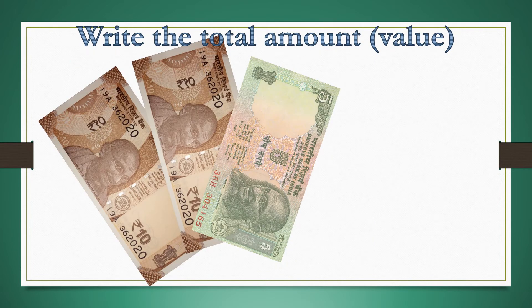Now let us add the given currency notes and find their values. Here we see two 10 rupees notes and one 5 rupees note. So, 10 plus 10 is 20; 20 plus 5 is 25. The total value of these notes is 25 rupees.